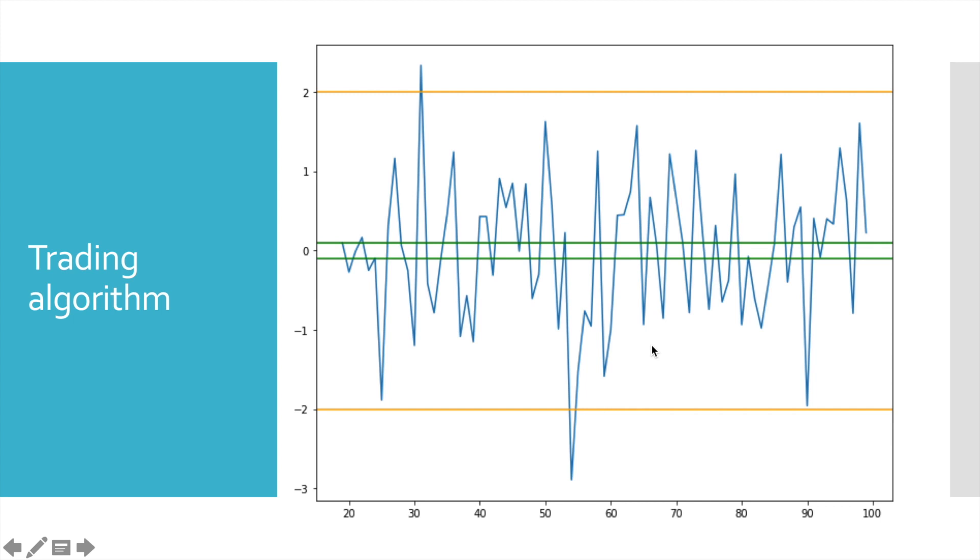And finally, we will get z-score chart, this blue line. If z-score crosses 2, like we said before, there is 95% chance that its value will bounce back. So at this point, we short spread. Similarly, if z-score crosses minus 2, there is 95% chance that it will go back to 0. And at this point, we long spread. And if z-score gets closer to 0, we close positions.